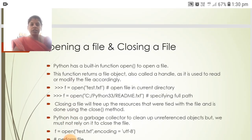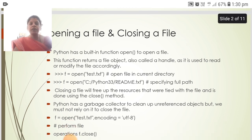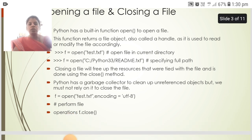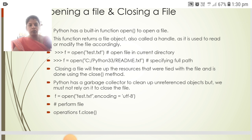Opening and closing a file — Python has a built-in function, open(), to open a file. This function returns a file object, also called a handle, as it is used to read or modify the file accordingly. The syntax is: f = open(filename). Closing a file will free up the resources that were tied with the file, and is done using the close() method.